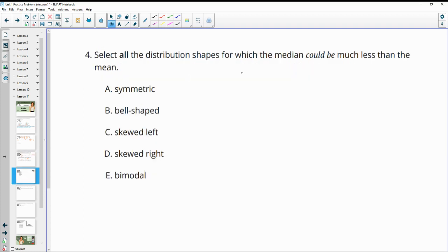Number four, select all distribution shapes for which the median could be much less than the mean. So symmetric and bell-shaped, they'd be the same, the mean and the median, so that wouldn't allow for the median to be less than the mean. So bimodal would allow that. When you've got two peaks, the median could certainly be much less than the mean, depending on how it worked out.